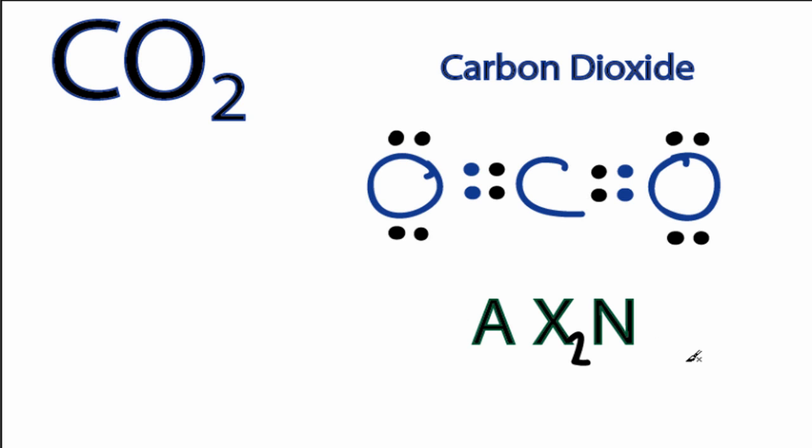And then N, that's the number of non-bonding electron pairs. Here the electron pairs are all involved in chemical bonds, so there are no non-bonding or lone pair electrons, so we won't even worry about N.